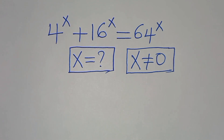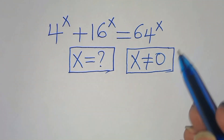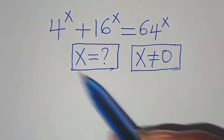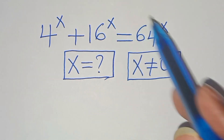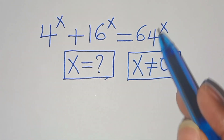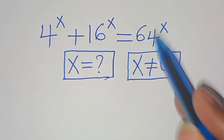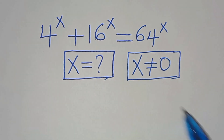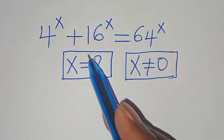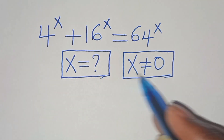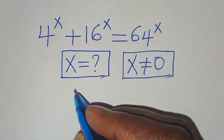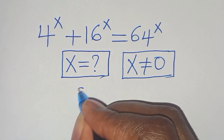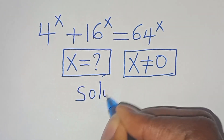Hello everyone, you're welcome to solve this nice exponential equation: 4 to the power of x plus 16 to the power of x equals 64 to the power of x. What is the value of x, given that x is not equal to zero? Let's provide a solution.